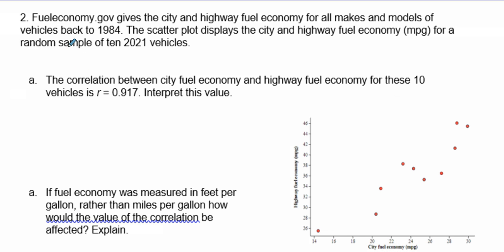Let's take a look at another example of how to use our r values. Fueleconomy.gov gives city and highway fuel economy from makes and models of vehicles back in 1984. The scatter plot displays city and highway fuel economy for random samples of 10 to 21 vehicles. The correlation between city fuel economy and highway fuel economy for these 10 vehicles is 0.917 — interpret this value.